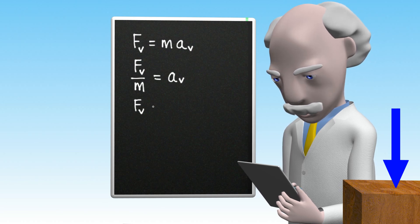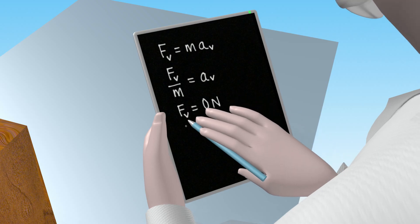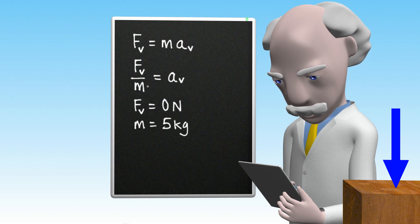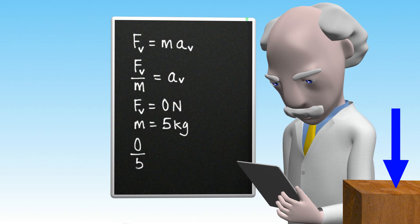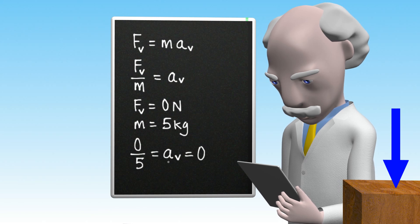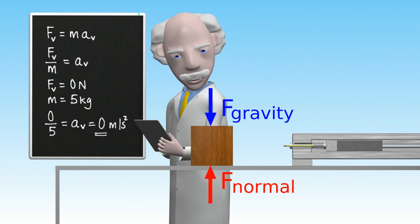Taking the sum of the vertical forces equal to zero newtons, and the mass of the block as five kilograms, then using the equation for acceleration, we see that this gives zero newtons divided by five kilograms, which equals the vertical acceleration. Since zero divided by five equals zero, it follows that the vertical acceleration is zero meters per second squared. We can see that this is indeed the case by observing that the block is not moving.